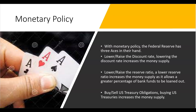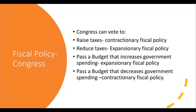Fiscal policy is a whole different story because it has to do with Congress. Congress can vote to raise taxes or to reduce taxes. If Congress votes to raise taxes, that's contractionary fiscal policy — it slows down the economy because people have less money to spend. But if Congress reduces taxes, that is expansionary fiscal policy, meant to speed up the economy and give people more money to spend.